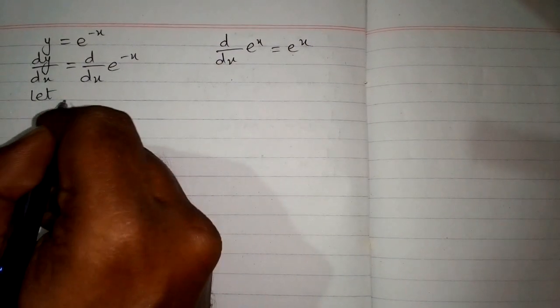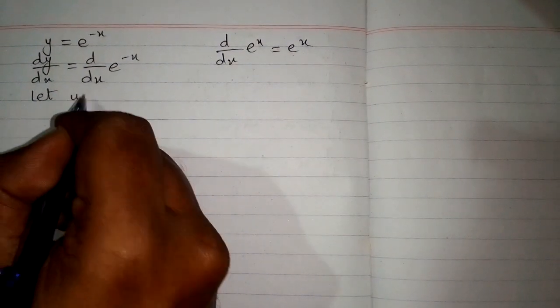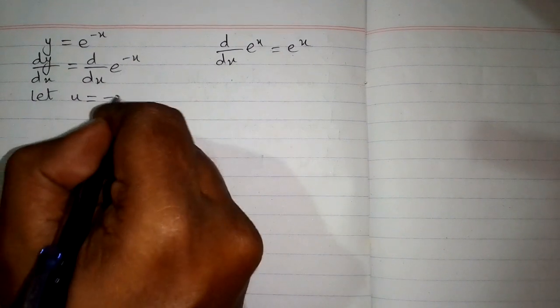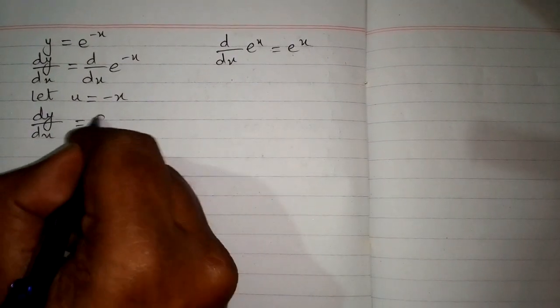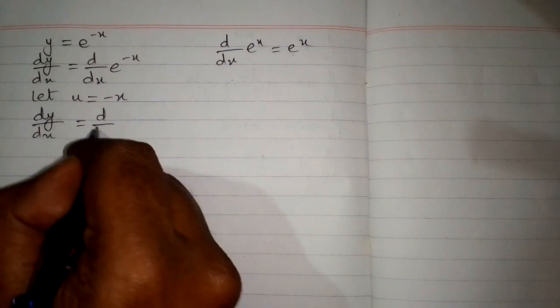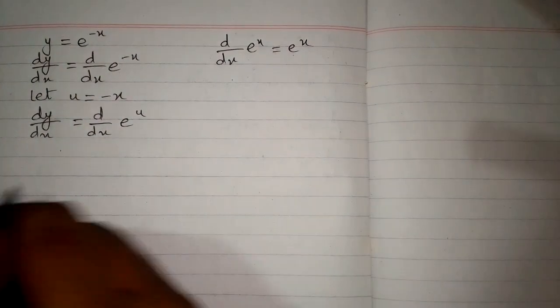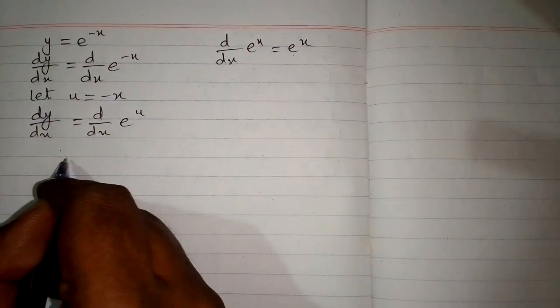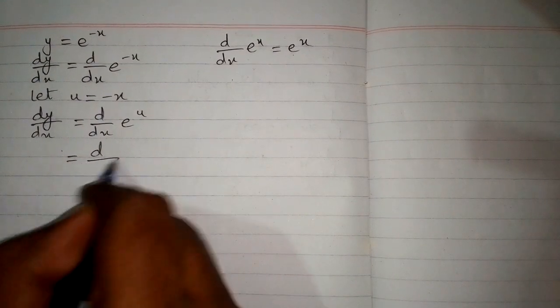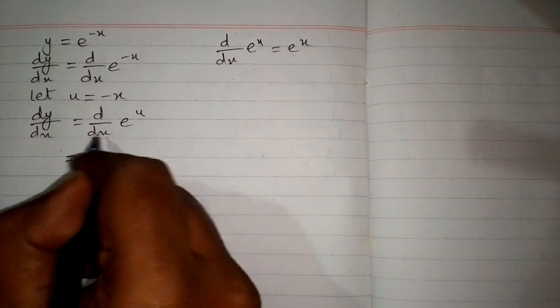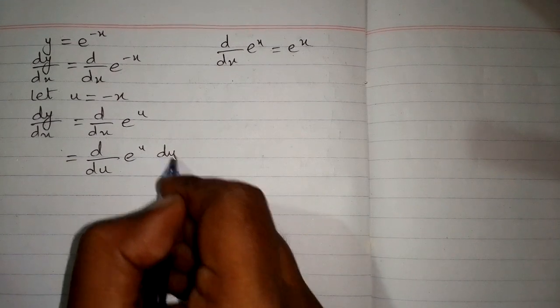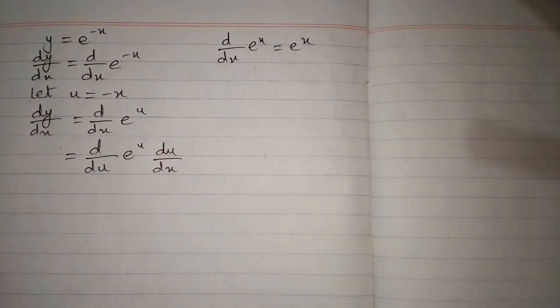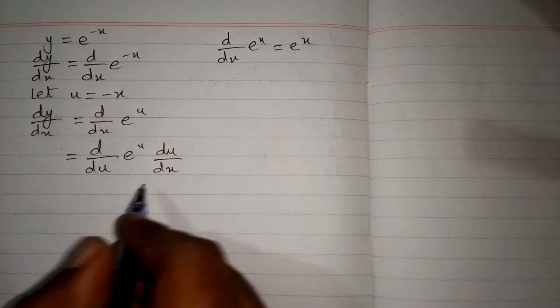So we will use the chain rule of differentiation. For this we will suppose that u is equal to minus x. So dy/dx is equal to d/dx of e to the power u. Again these variables are not the same, and we can replace this dx by du and multiply it by du/dx. This is the chain rule of differentiation.